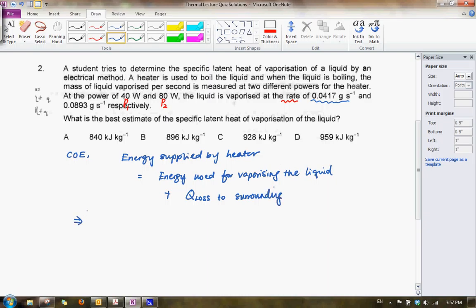Writing that in terms of the power rating, what we will have is that the power of the heater multiplied by the time which we use to carry out the experiment must be equal to the energy used for vaporizing the liquid. And since it's solely used for vaporizing the liquid, it would be just M times L, which is the specific latent heat of vaporization of the liquid, which is what we want to actually determine here, plus heat loss to the surrounding.